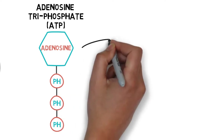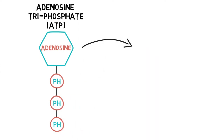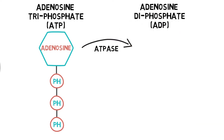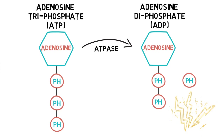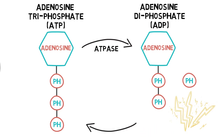ATP can be broken down by an enzyme called ATPase to release energy. ATP is broken down into adenosine diphosphate, or ADP for short, leaving an inorganic phosphate along with the release of energy. However, unfortunately ATP stores are limited, so ATP must be resynthesised in order for us to stay functioning.